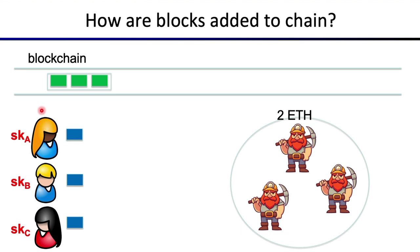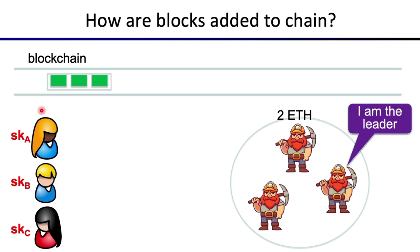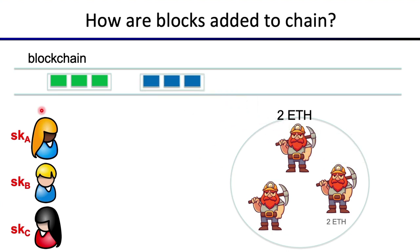The next thing that happens is we move to the next block. Our friends Alice, Bob, and Carol again have a new set of transactions they want to post — these transactions indicate who's paying whom, or maybe some more complicated data. They sign these transactions, send them to the network, and a new leader gets elected. Again, the new leader forms the block, posts it on the blockchain, and gets the two ETH reward. This process continues again and again — that's how the blockchain evolves.